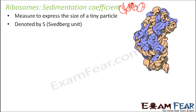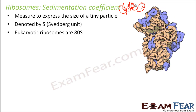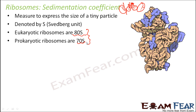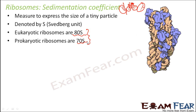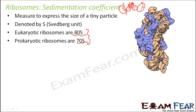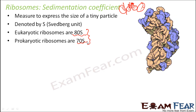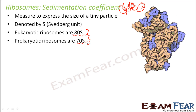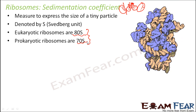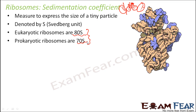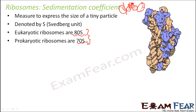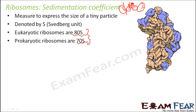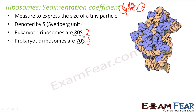The sedimentation coefficient is denoted by capital S - the Svedberg unit, named after the scientist who worked on it. Eukaryotic ribosomes are 80S and prokaryotic ribosomes are 70S. Greater the value of the sedimentation coefficient, greater is the size of those ribosomes. The sedimentation coefficient is not always linearly related to molecular weight - it depends on shape and size as well, so all factors are considered when it is calculated.